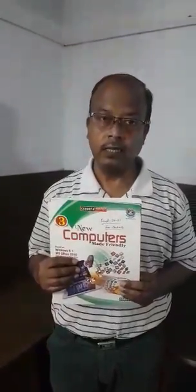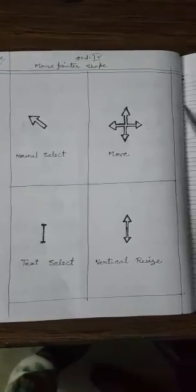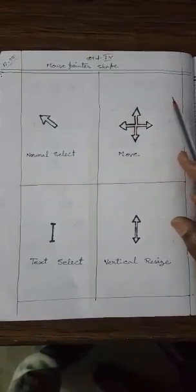Today we will write questions and answers. Please keep out your copy to write them down. I think whatever diagrams I have instructed to draw, you should complete them. Now keep out your copy to write down the questions and answers of Chapter 2.